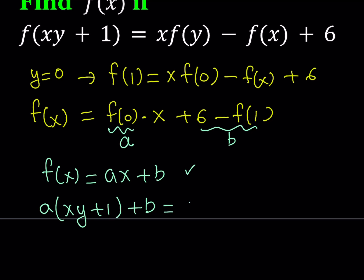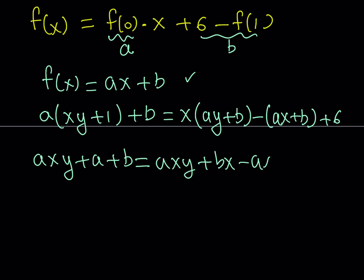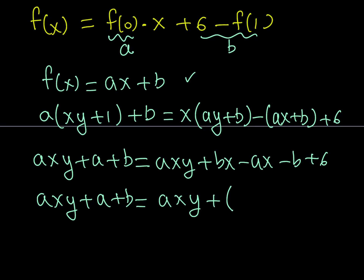The right-hand side gives x times f of y, where f of y is ay plus b, minus f of x which is ax plus b, plus 6. Expanding the left-hand side gives axy plus a plus b. Expanding and simplifying the right-hand side gives axy plus b minus a times x, plus 6 minus b.